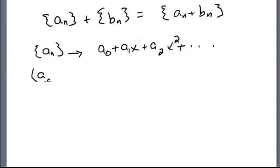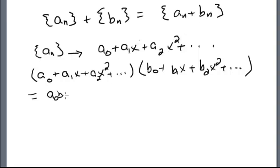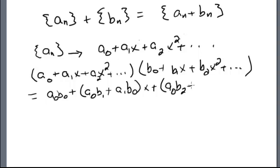To multiply two sequences, we take (A₀ + A₁X + A₂X² + ···) times (B₀ + B₁X + B₂X² + ···) and follow the multiplication of power series. That gives us: A₀B₀ plus (A₀B₁ + A₁B₀)X plus (A₀B₂ + A₁B₁ + A₂B₀)X² plus dot dot dot.